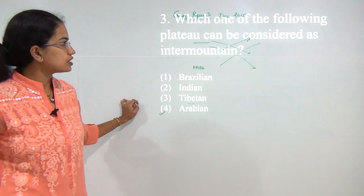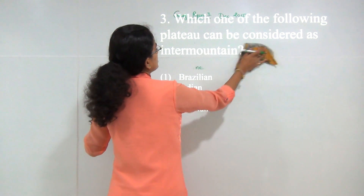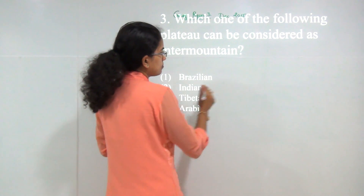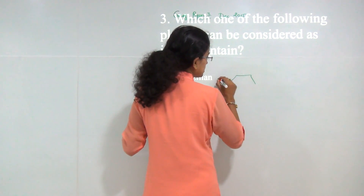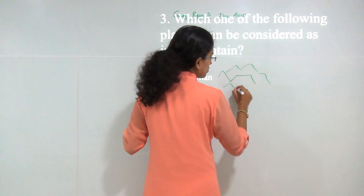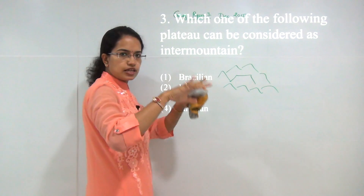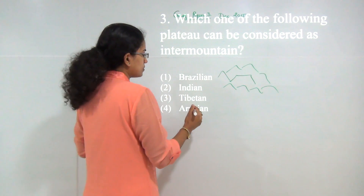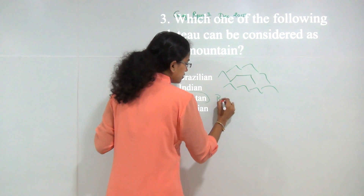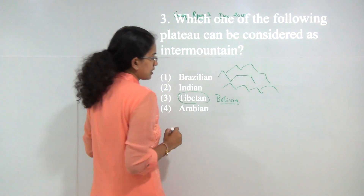Next question: which of the following plateaus can be considered an inter-mountain plateau? An inter-mountain plateau is a plateau which is enclosed by mountains on all sides. Common examples are the Tibetan Plateau and the Bolivian Plateau in South America. So the answer here would be 3.